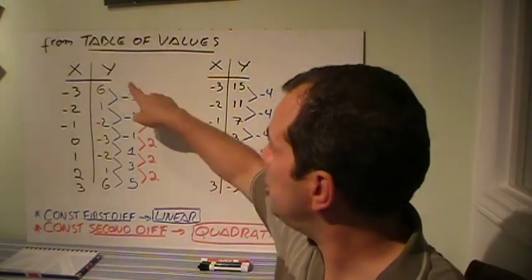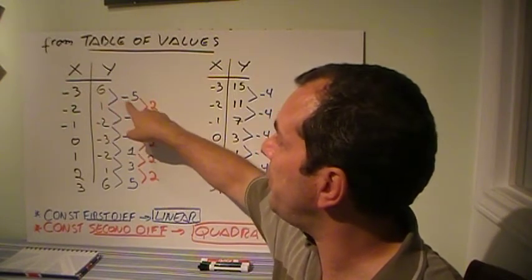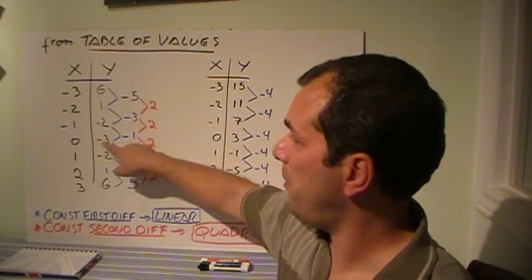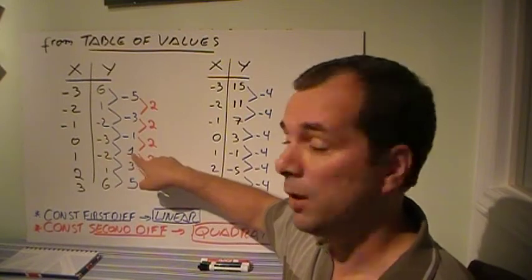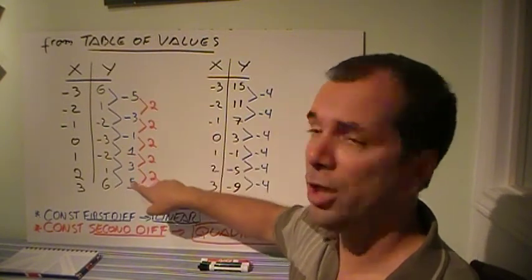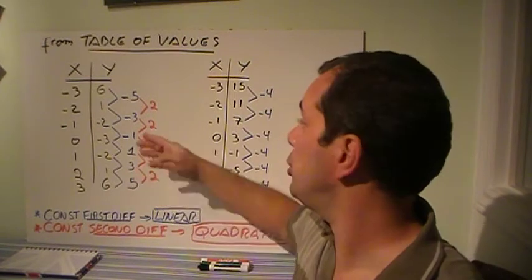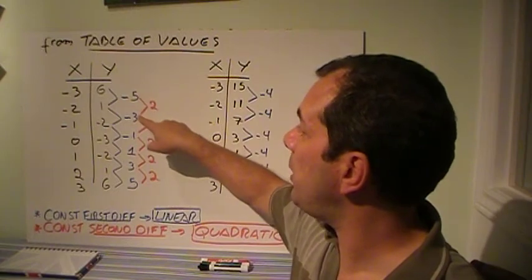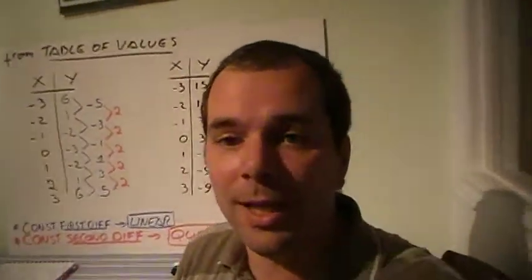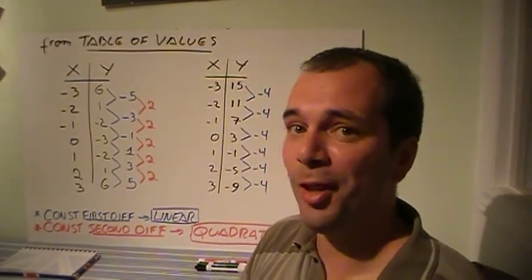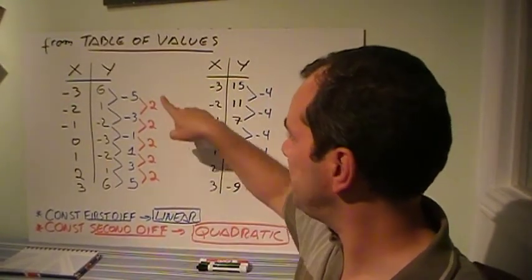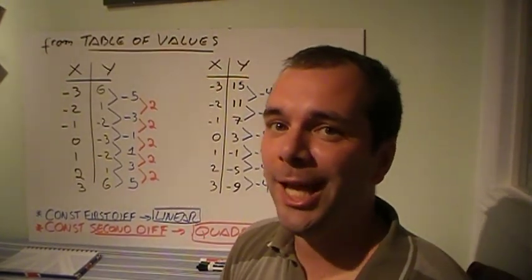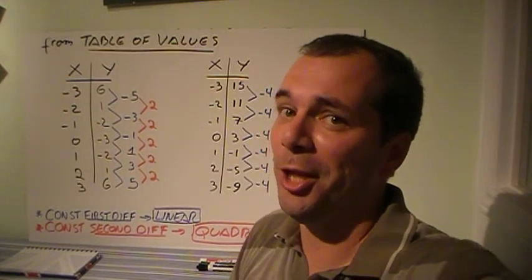For a quadratic, you check the first differences. From 6 to 1 is minus 5; from 1 to minus 2 is down by 3; from minus 2 to minus 3 is down by 1; but from minus 3 to minus 2 I went up by 1, then up by 3 and up by 5. Those are not constant. So I check again for the second differences — the differences on the differences. From minus 5 to minus 3 I go up by 2, up by 2, up by 2. They are constant. If the second differences are constant, this is a quadratic function.